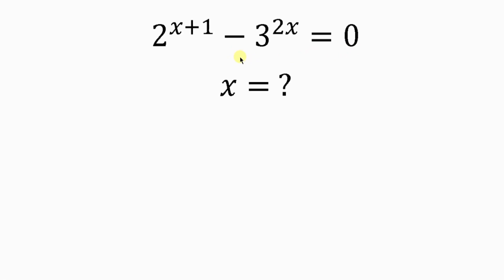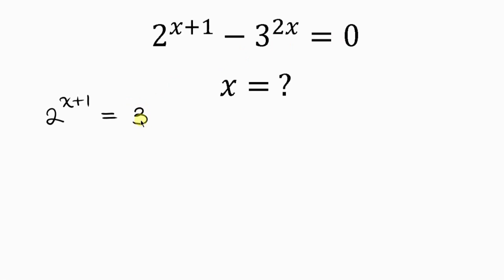Our first step will be to move negative 3 to the 2x to the right hand side. When we do that we have 2 to the x plus 1 on the left equal to positive 3 to the 2x, as the negative term crosses to the right and becomes positive.